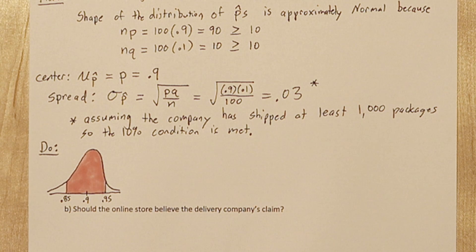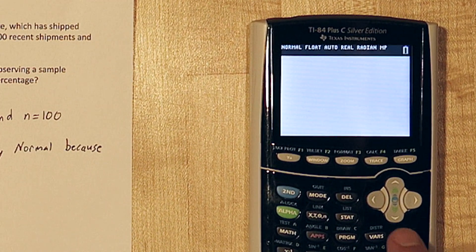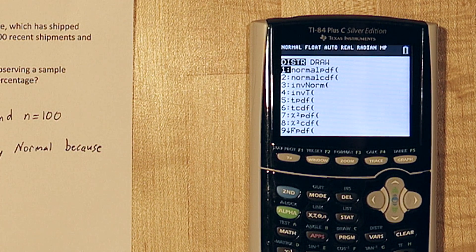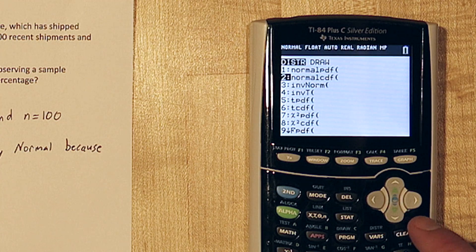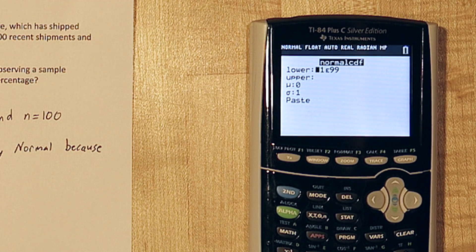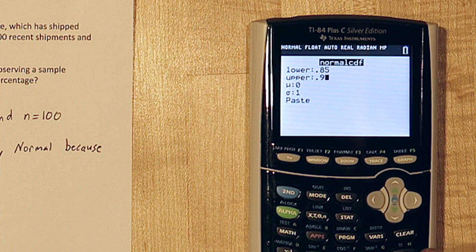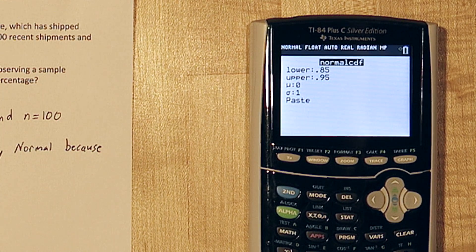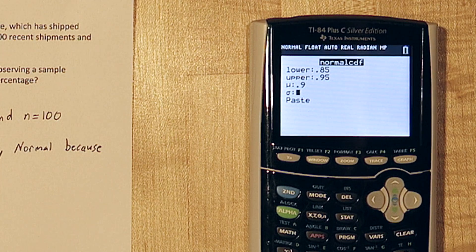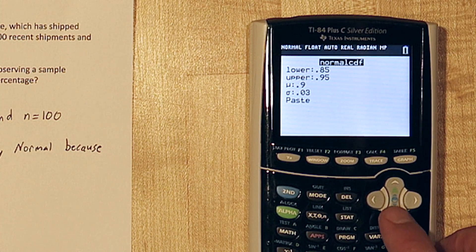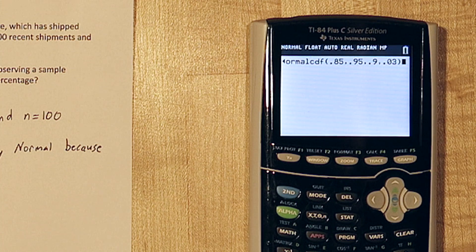Now we can use normcdf to calculate the probability of interest. To access it, press 2nd then the vars button. This is our distribution menu. Go to normcdf. Our lower limit is 0.85 and our upper limit is 0.95. Our mean is 0.9 and our standard deviation is 0.03. Press enter on paste and then press enter again.